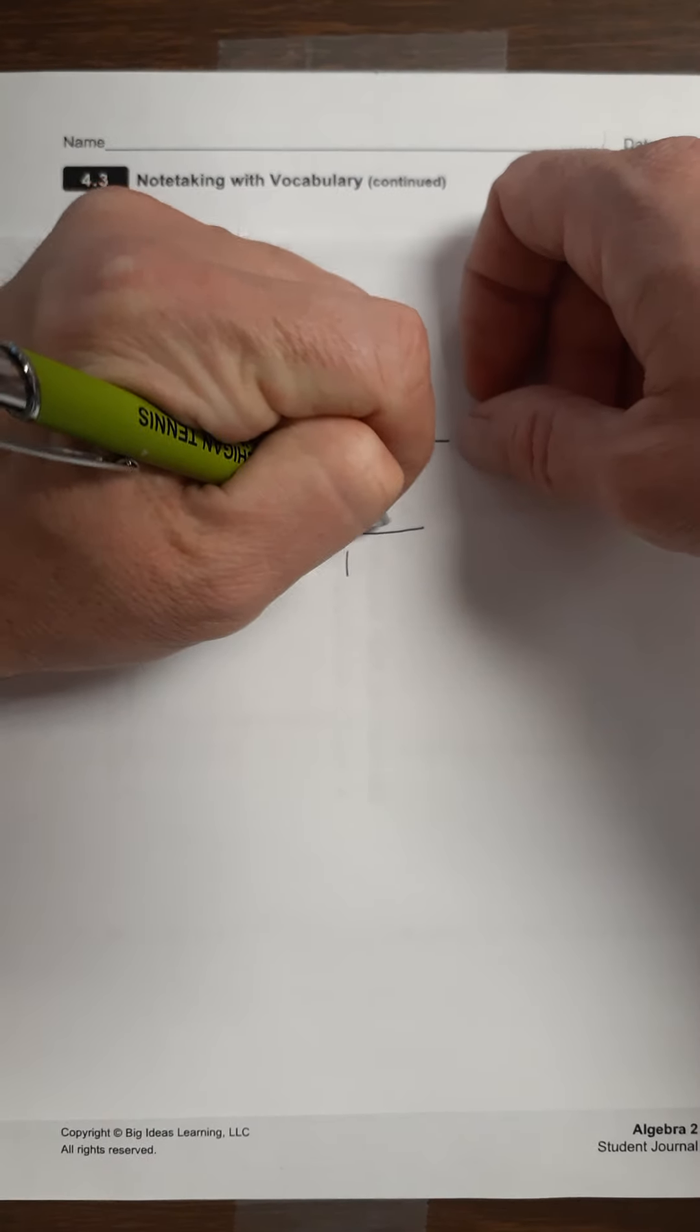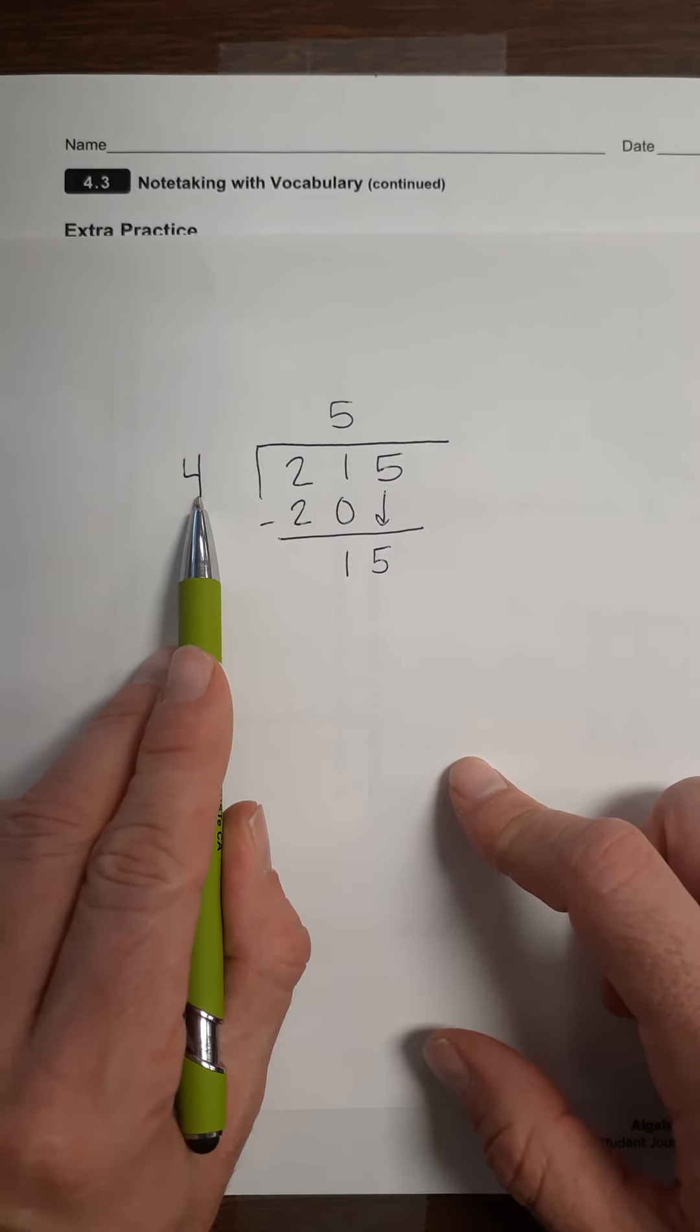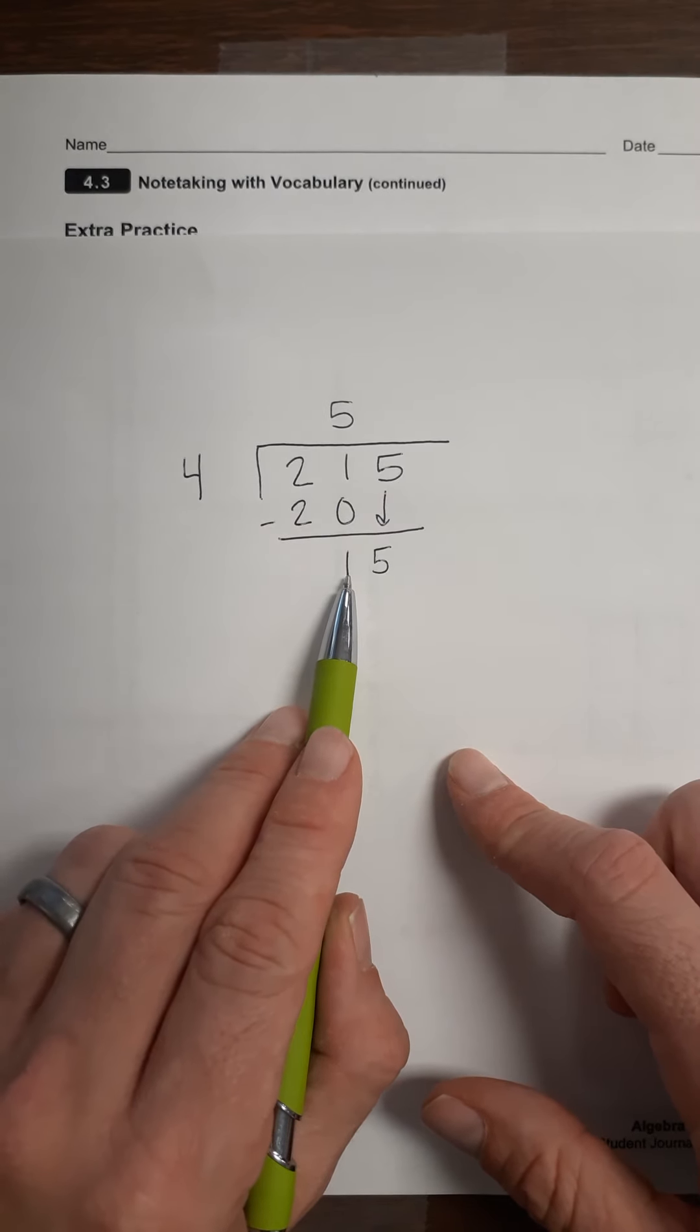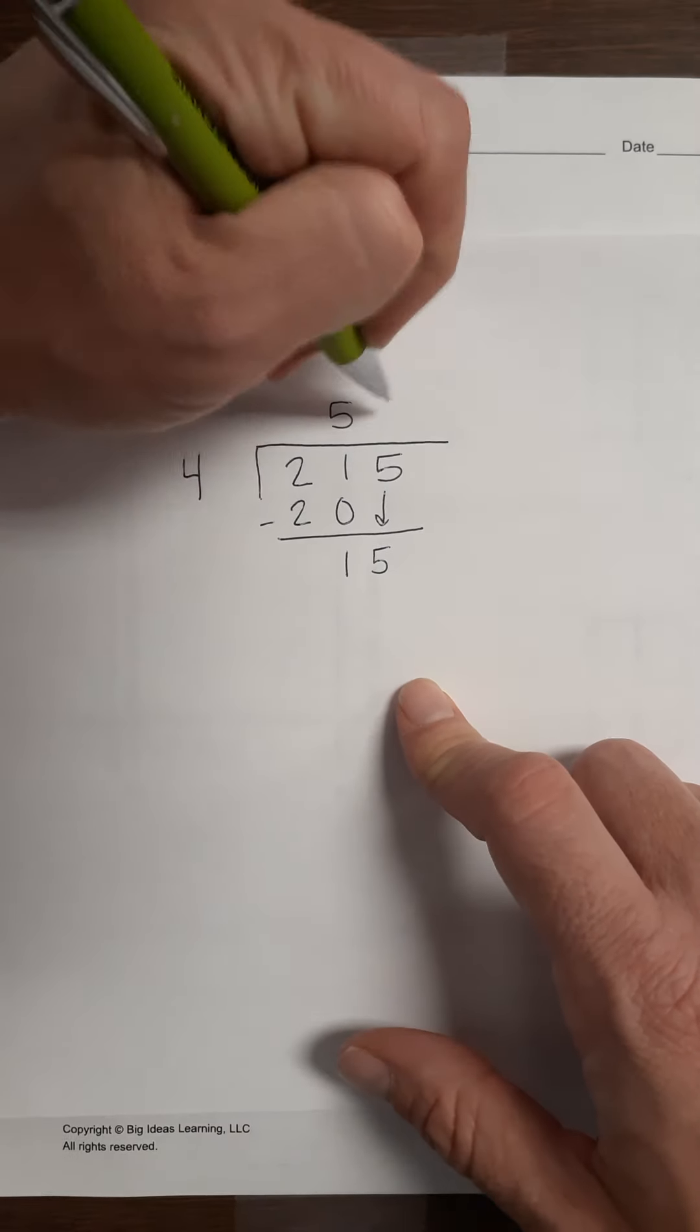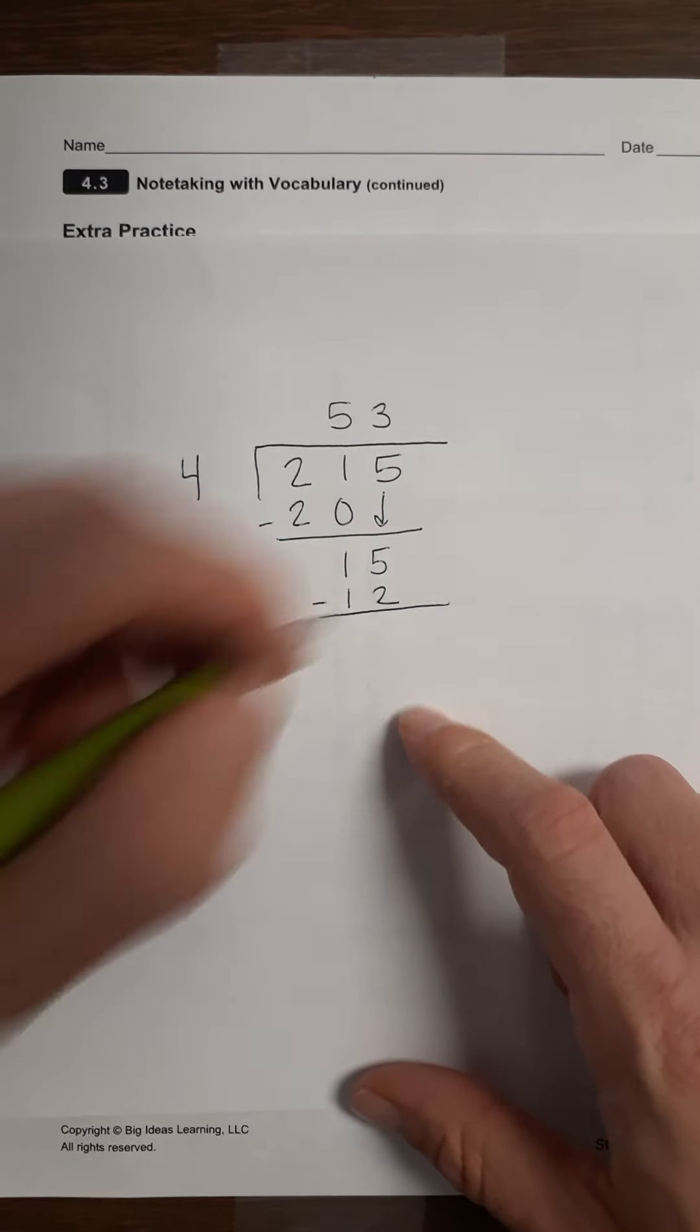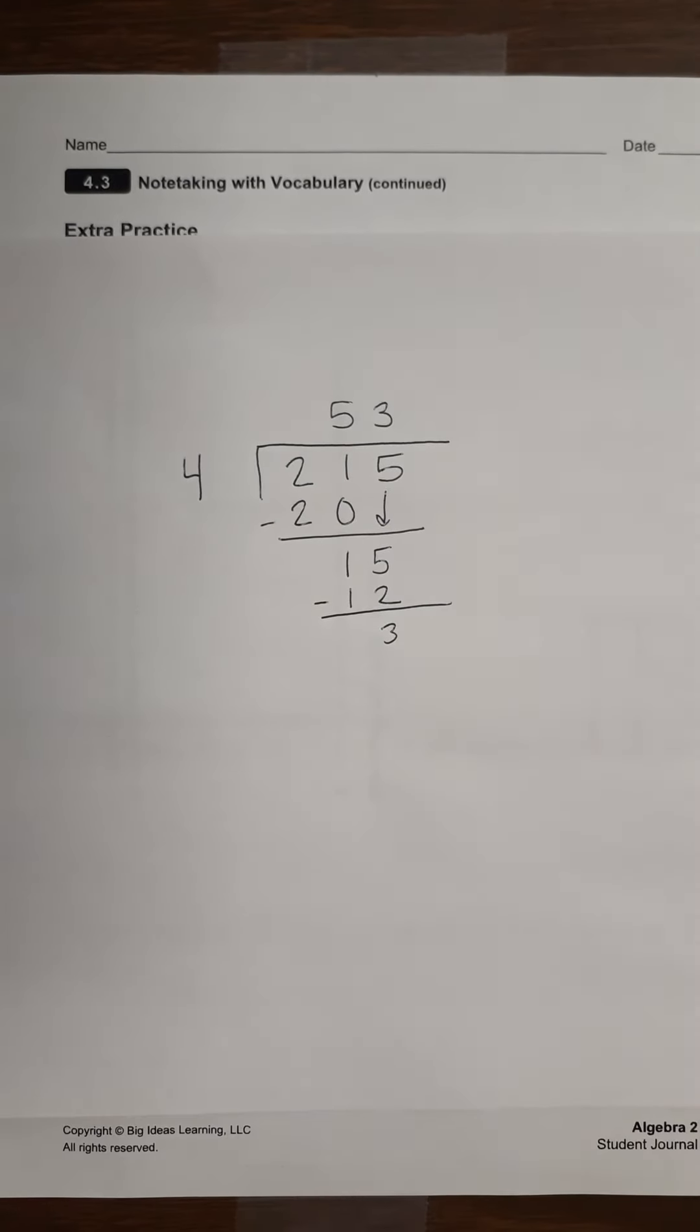Now there was also that 5, and we carry that down. I wonder if this is ringing any bells from elementary school. So now we take 4, and we ask ourselves, what could we multiply 4 by to get it to 15? 4 times 1 is 4, 4 times 2 is 8, 4 times 3 is 12. That might be an option. 4 times 4 is 16. Now we've gone too far. So we want to do 4 times 3. So that would be 12. And now we'll subtract it again. 15 minus 12 is 3. And there's nothing to carry down anymore. 4 times 1 is 4. We've already gone too far. So this 3 must be our remainder.